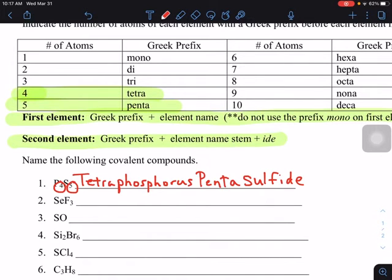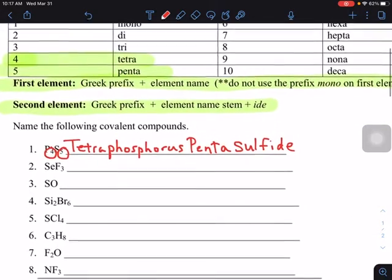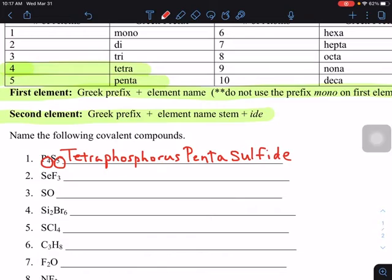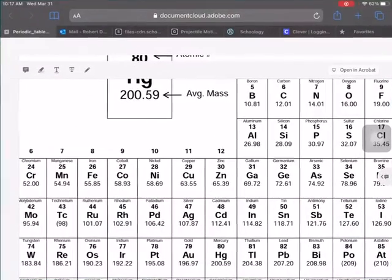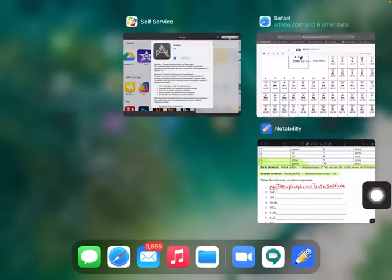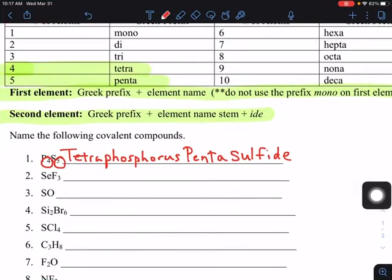The next one, SeF3, there's no subscript on the Se. This is Se right here, selenium. On the first one, if there's only one of them, we don't use mono on the first element. So we don't say monoselen​ium, we just say selenium.